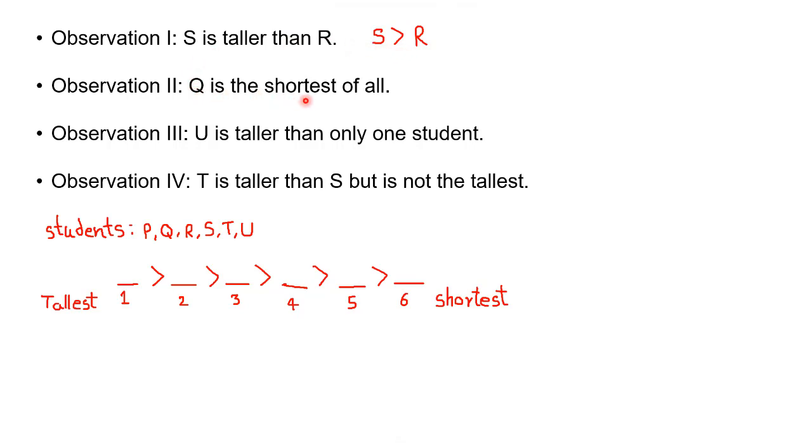Q is the shortest of all. That means Q will be our number 6 because it is the shortest of all.